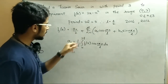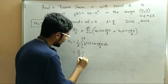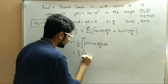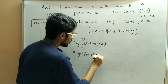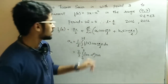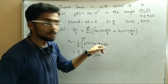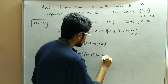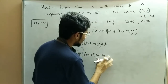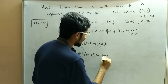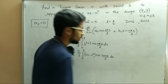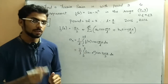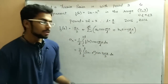Substituting values: 2/3 times integral from 0 to 3. What is f(x)? It is 2x minus x squared. So we have (2x - x²) cos(nπx/L) dx. Putting L = 3/2, the cosine term becomes cos(2nπx/3). Now we apply integration by parts to this equation.